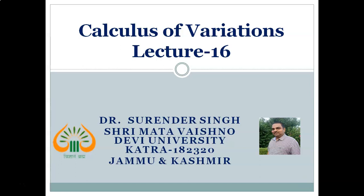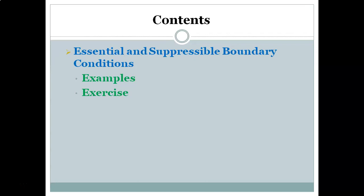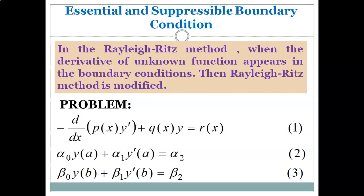Hello students. In this lecture 16 of calculus of variations, we are going to discuss the essential and suppressible boundary conditions, then certain examples related to this, and a few exercises for your practice. This topic belongs to the earlier discussed Rayleigh-Ritz method, which was used to solve some boundary value problems.